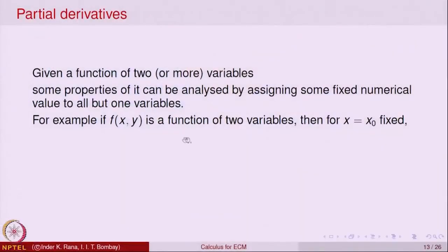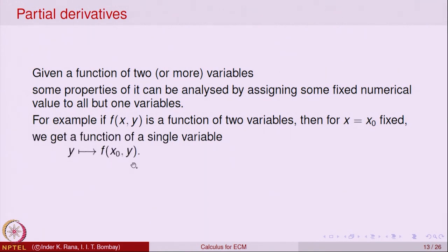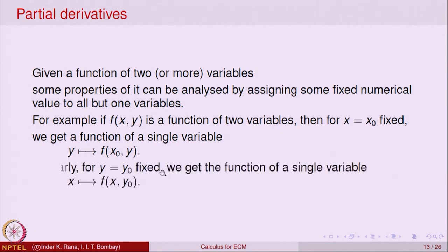Let f be a function of two variables f(x, y). If we fix the variable x at x = x₀, we calculate f(x₀, y) for all y. Since x₀ is fixed and only y is changing, this becomes a function of the single variable y. Similarly, you can fix y = y₀ and look at the values of f(x, y₀) as x varies in the domain. So fixing x₀ gives a function of y, and fixing y₀ gives a function that depends only on x — both are functions of a single variable.